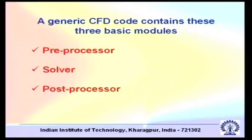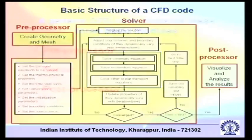Because of obvious restrictions, we will not be considering any particular commercial code in this lecture to illustrate how to go about that, but we will consider a generic approach that can be used for any sort of CFD code to go ahead with solving a problem. So let us go through this presentation and see what a generic CFD code contains. A generic CFD code contains three basic modules: one is a preprocessor, another is a solver, and another is a post-processor.